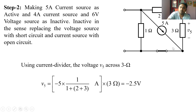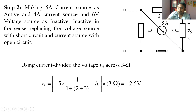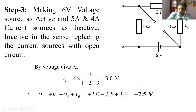In Step 2, the 5 A current source is active. The 4 A source is open circuit and the 6 V voltage source is short circuit. The current divides again; however, the current enters the negative terminal, so I consider this negative. Applying the current division rule: I = −5 × (1) / (1 + 2 + 3). The voltage across the 3 Ω resistor in Step 2 is V2 = −(5/6) × 3 = −2.5 V.